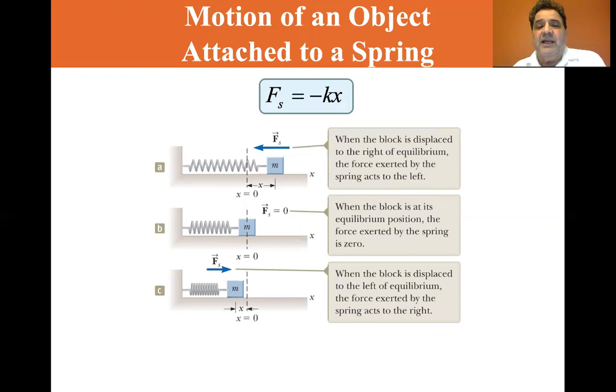We should all recognize this as Hooke's law. The force of the spring is equal to minus kx because the force is opposite. The minus comes from the force being opposite the direction of x.